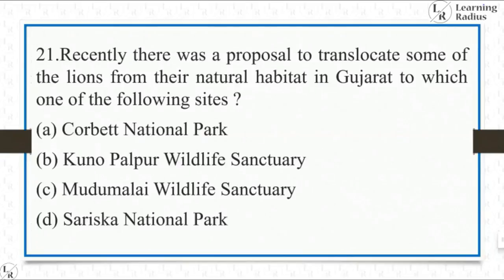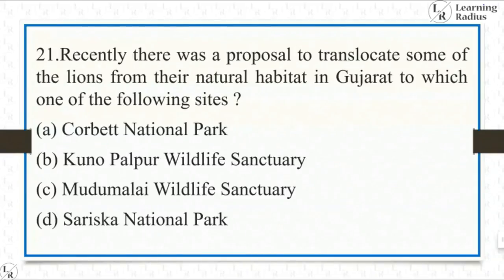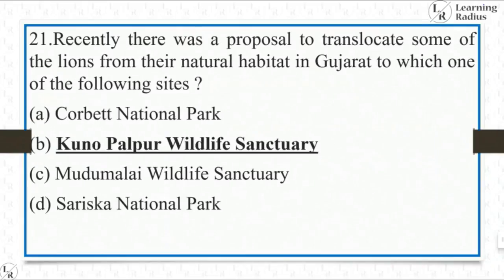Recently there was a proposal to translocate some of the lions from their natural habitat in Gujarat to which one of the following? Options: Corbett National Park, Kuno Palpur Wildlife Sanctuary, Mudumalai Wildlife Sanctuary, or Sariska National Park. It's a very direct GK question — the answer is Kuno Palpur Wildlife Sanctuary.